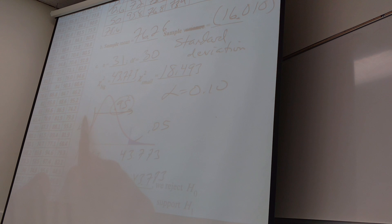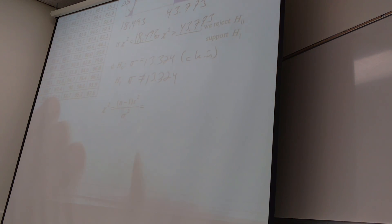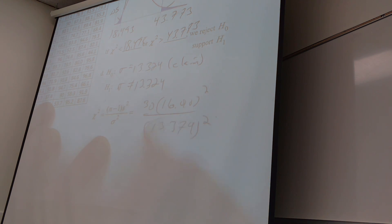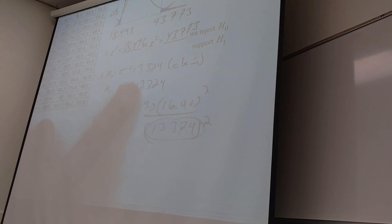Wouldn't that be 0.90, not 0.05? No. Because if that's 0.05 in the tail, there must be 0.95 above it. I'm not saying in the middle, I'm saying completely above it. So when I do this work, I get 30 times 16.010 squared divided by 13.374 squared. Everybody see where I got that from? From the claim, just like we did before. We got mu from the claim, now we get sigma from the claim.